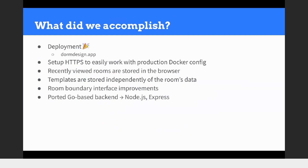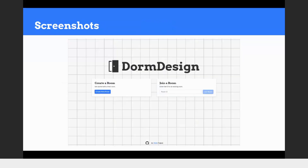What did we accomplish this semester? First: deployment — you can actually go to the live site right now. We set up HTTPS to work easily with the production Docker configuration for an extra layer of security. We also implemented recently viewed rooms stored in the browser. Templates are stored independently of the room's data. We made some room boundary interface improvements and ported the Go-based backend to Node, which may seem like a questionable decision — I'll explain a bit later.